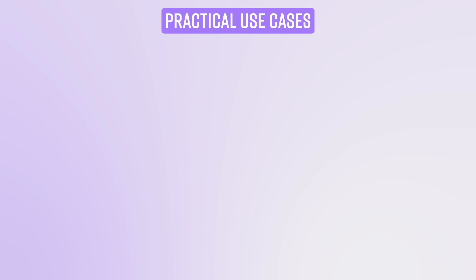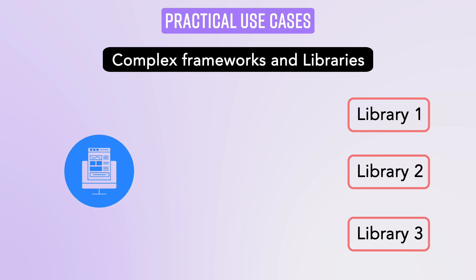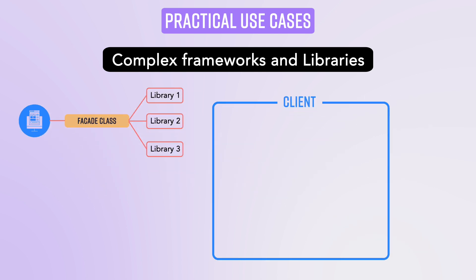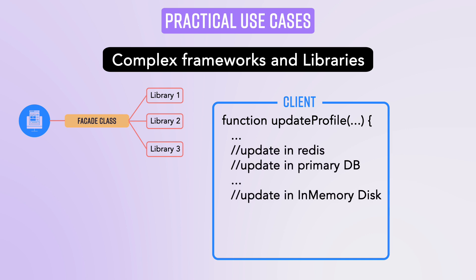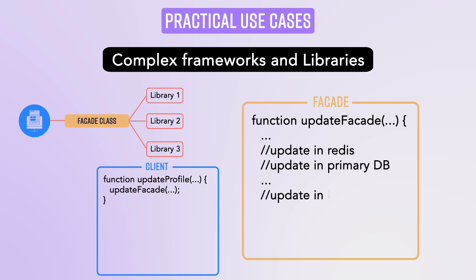Let's look at some practical use cases of the facade pattern. If you are using one or multiple libraries that utilize complex functions to achieve a particular operation, instead of the client code orchestrating logic with those libraries directly, the client can simply call the facade layer. For example, if you have an update function that requires a call to Redis, a call to the main DB, and some in-memory calculations — doing all of this in the client code becomes very cumbersome. Instead, you provide a facade like an update data facade that handles all these operations behind the scenes.